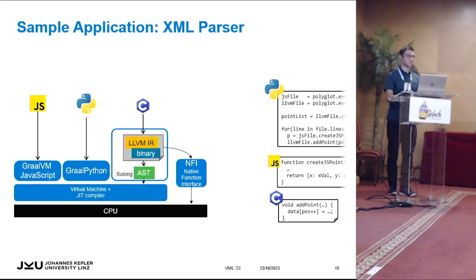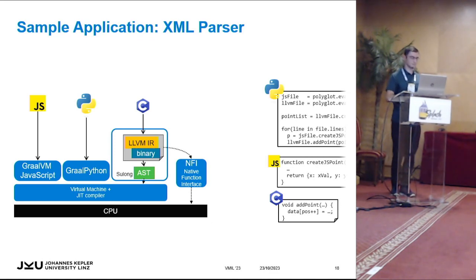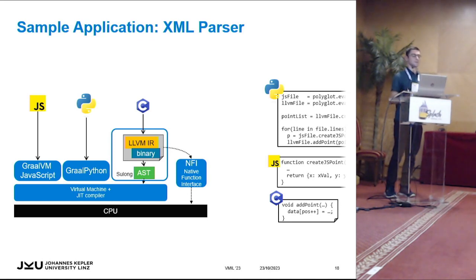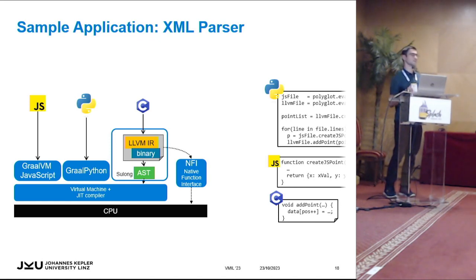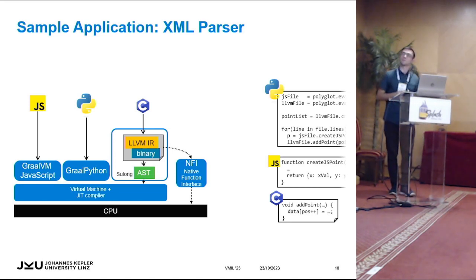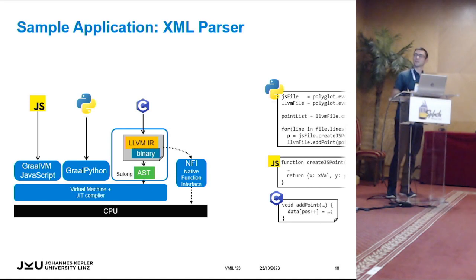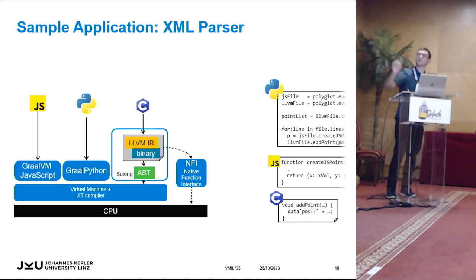With the Sulong runtime, we have LLVM IR and binary in one file and can execute C functions natively or via the AST and GraalVM JIT compiler. If GraalPython receives a JavaScript point, it does not handle it directly but forwards the access to the JavaScript runtime. This ensures language-specific semantics are not violated — accesses always happen in the corresponding language runtime. This is why we cannot deal with foreign language data in C when executing natively: there is no way to invoke another language runtime from native execution.